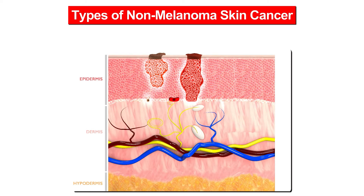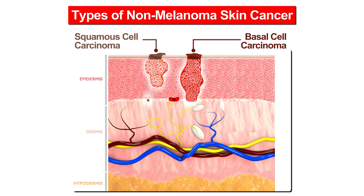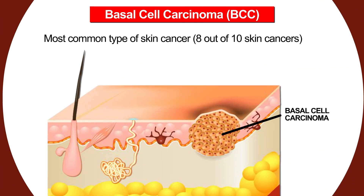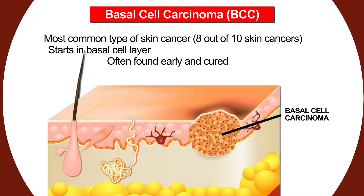There are many types of non-melanoma skin cancer. The three most common are basal cell carcinoma, squamous cell carcinoma, and Merkel cell carcinoma. Basal cell carcinoma is the most common type of skin cancer, making up 8 out of 10 skin cancers. It starts in the basal cell layer, or lower part of the epidermis. This cancer is often found early and cured. It can come back but seldom spreads to other parts of the body. Advanced basal cell carcinoma is very rare.